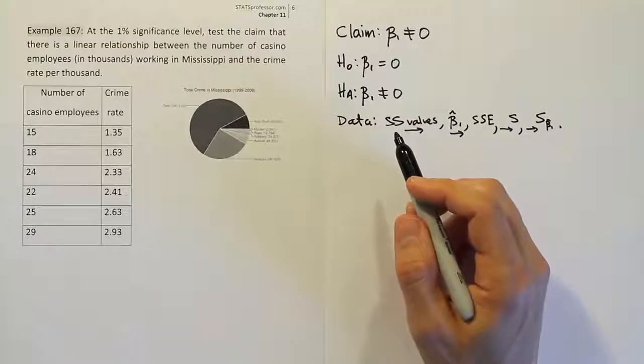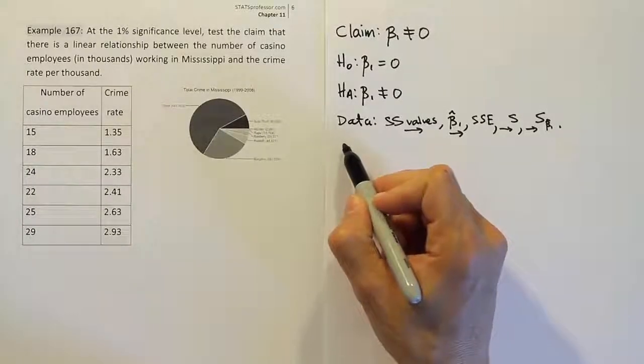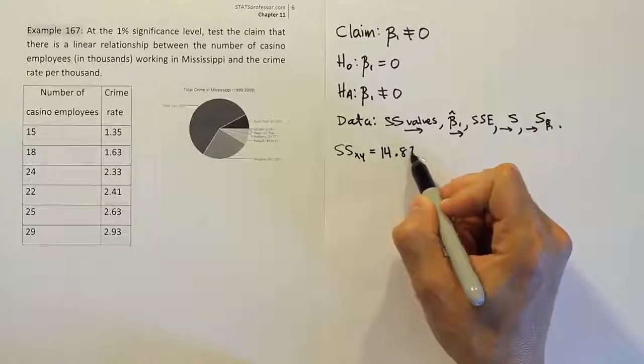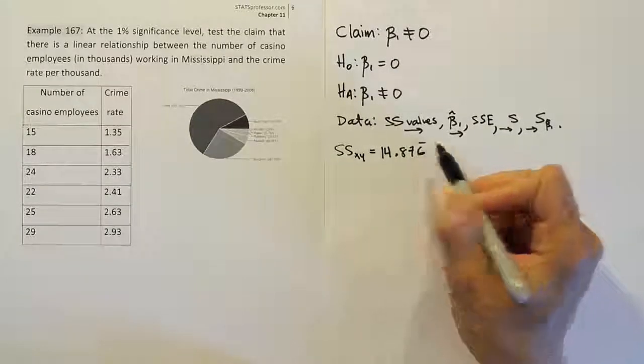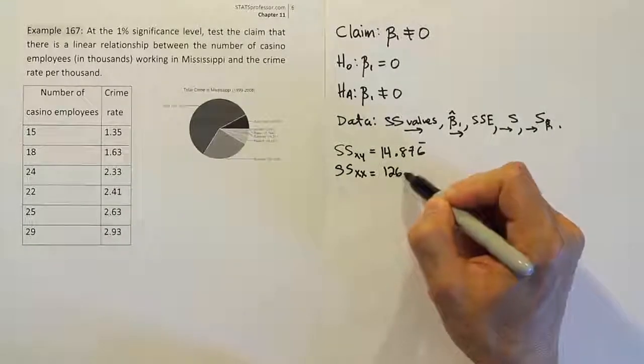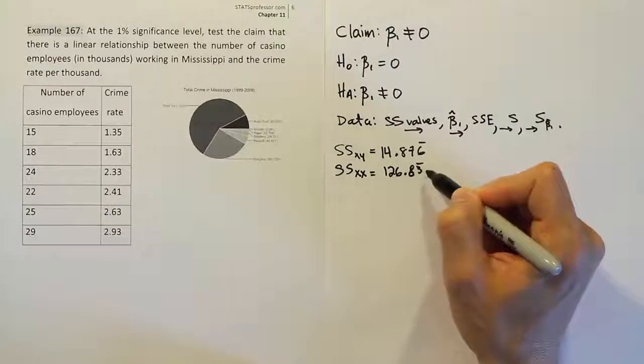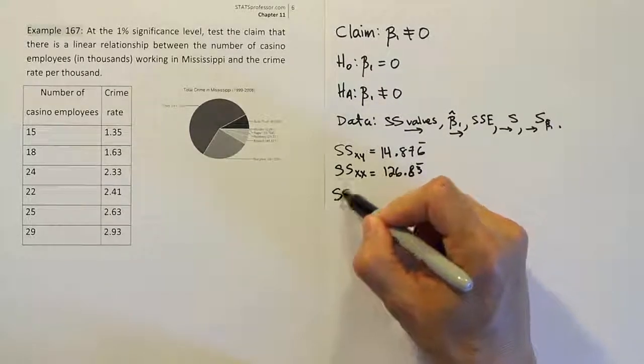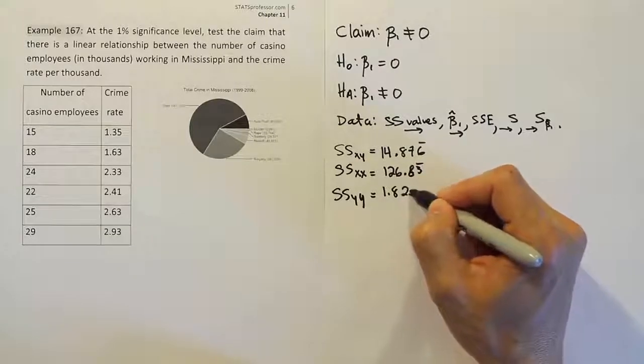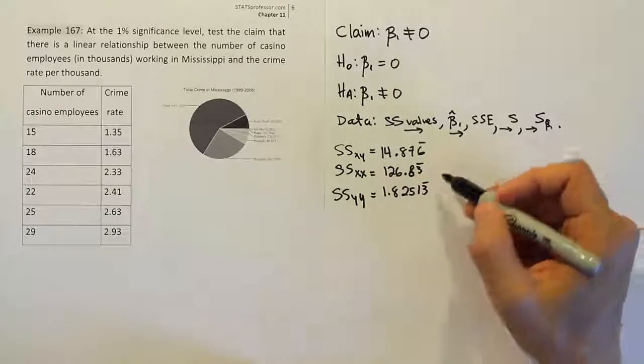So let's apply these techniques. Now, we're not going to actually work out the full SS set of values because it takes a long time, and I've shown how to do that before. So I'm just going to basically copy down numbers here that I've already done for us. So 14.876 repeating. That's your mixed term, SSₓᵧ. SSₓₓ is 126.83 repeating. And then finally, we do our last step, which is SSᵧᵧ, which is equal to 1.82513 repeating. Those are our numbers that we're going to need for the next set of steps.